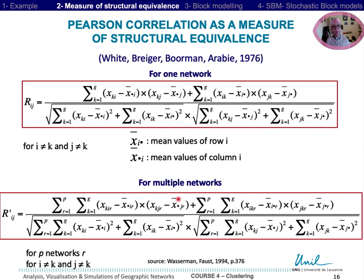At the same moment, White et al. proposed a form of Pearson correlation between nodes relations. These indexes standardize all the calculations by the mean value in rho and in colon.